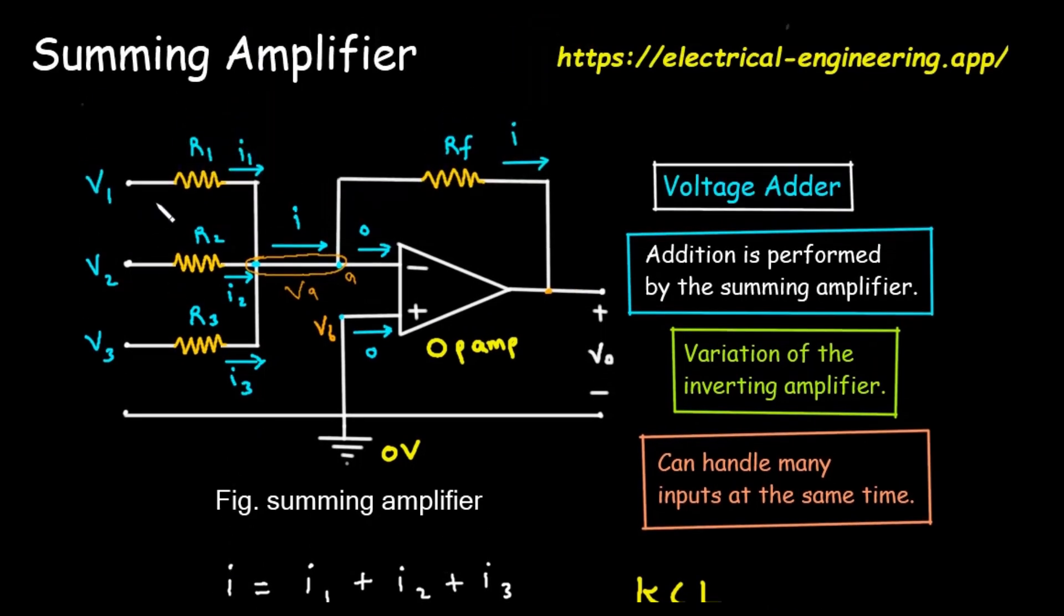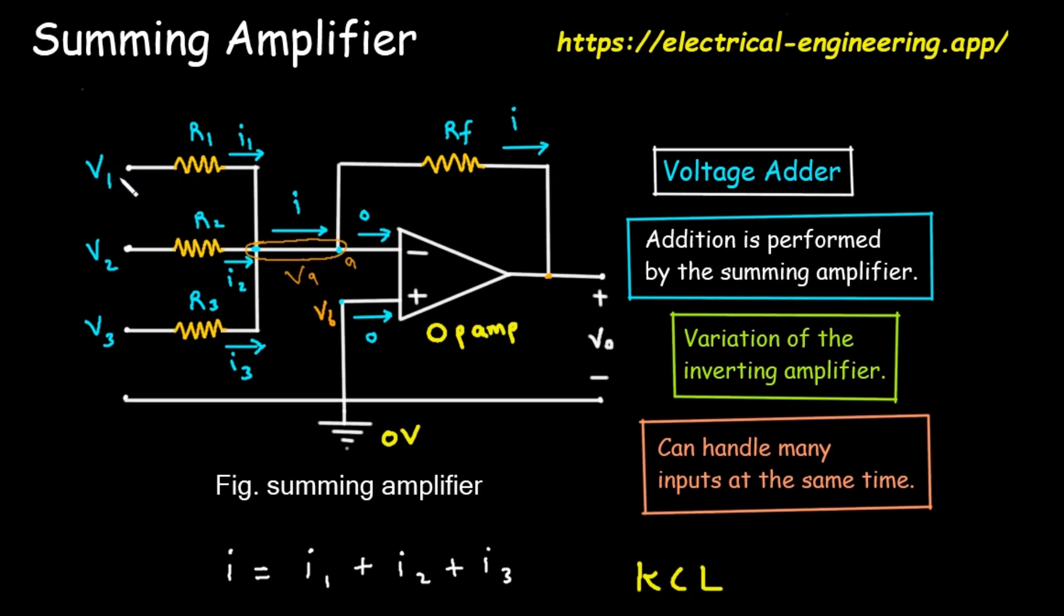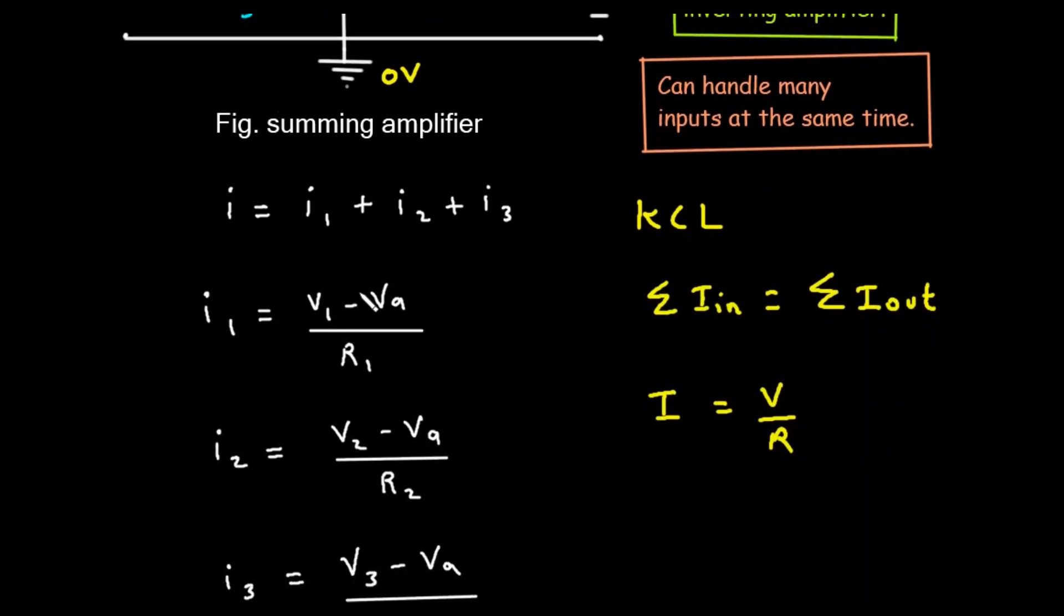Let's write this out for each current. First, the current I1 flows through resistor R1. The voltage on the left is V1, and on the right is Vi. So, I1 equals (V1 minus Vi) divided by R1.